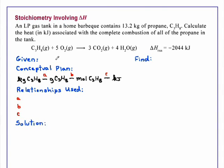Stoichiometry involving delta H. An LP gas tank in a home barbecue contains 13.2 kilograms of propane, C3H8. Calculate the heat in kilojoules associated with the complete combustion of all of the propane in the tank.